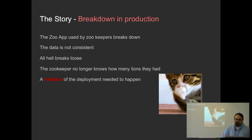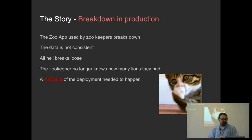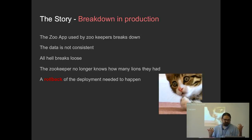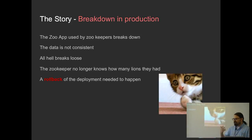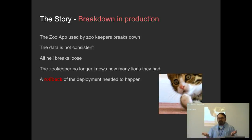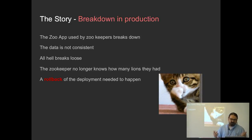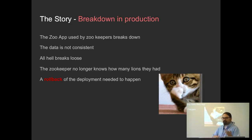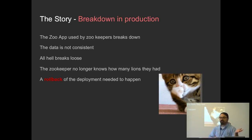Then something broke in production. The zoo app failed. Zookeepers no longer knew which animals were in which pens — they didn't even know how many tigers they had — so it kind of went crazy. They needed to do a rollback of the deployments to get back to a better state.